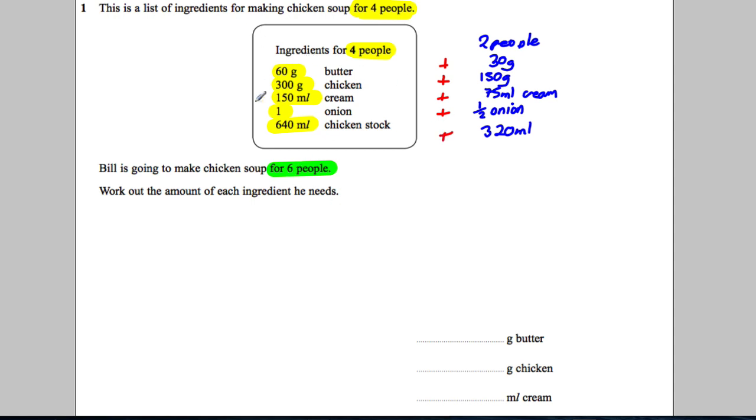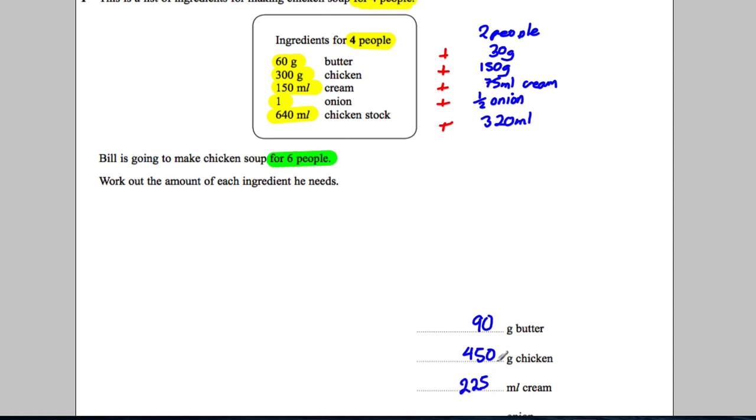So for six, it's going to be 60 add 30, which is 90 grams of butter. It's going to be 300 plus 150, which is 450 grams of chicken, and 150 millilitres plus 75, which is 225 millilitres of cream.